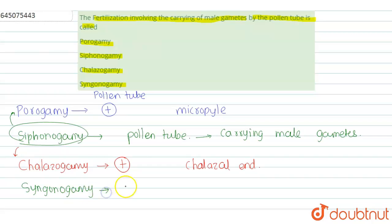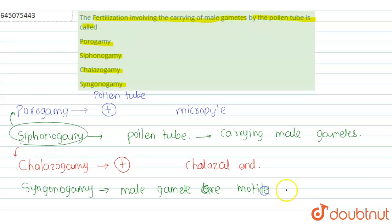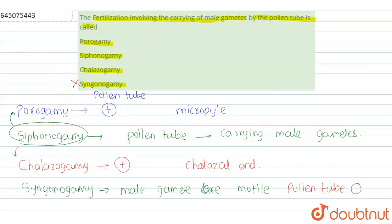Zoidogamy is a type of fertilization in which the male gametes are motile. Because the male gametes are motile, there is no use of the pollen tube — so the pollen tube is absent in zoidogamy. Since there is no pollen tube, there is no question of carrying male gametes by it, so this option is eliminated.